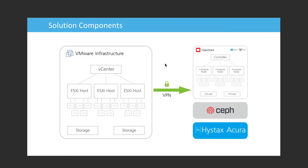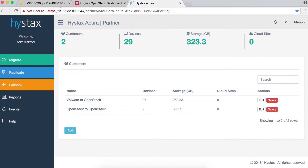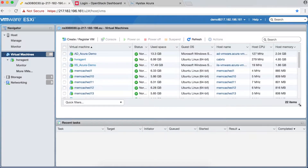Before we start, let me show you the topology of the application and describe how it works. We have a business application consisting of 20 virtual machines: an Oracle database on Red Hat, two Windows machines — one with Active Directory, another with Internet Information Services — and 17 Ubuntu Linux machines in a Memcache cluster. The web application running in IIS retrieves data from Oracle database, stores it in the Memcache cluster, and the IIS machine is authorized through Active Directory.